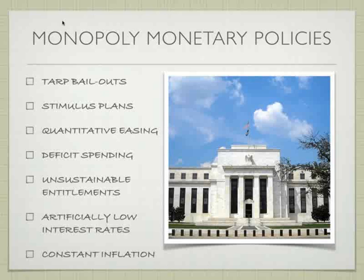Of course we see artificially low interest rates, which we were just recently told will be continuing for many years to come. Constant inflation is part of the whole picture. Obviously the U.S. government is one of the biggest debtors in the world and has no interest in seeing interest rates go very high at all, because the monetary system is based on debt — there are interest payments that have to be serviced — so you want to keep that low.